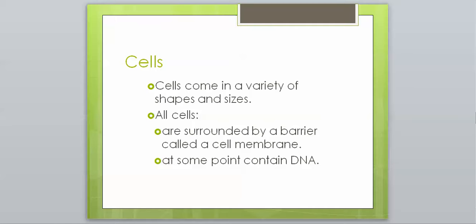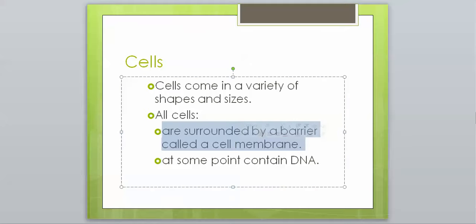Cells in general, after we discovered them, as we've advanced our technology, we found out a lot more about them. We found out that they come in a variety of shapes and sizes. We've also discovered that they're surrounded by a barrier called a cell membrane. We talked about that in our introduction activity. The cell membrane, every single cell will have one of those.